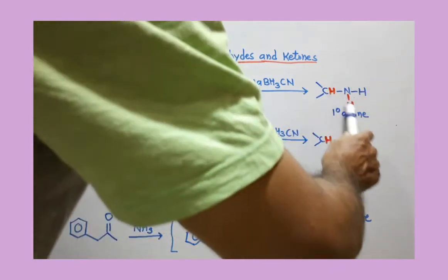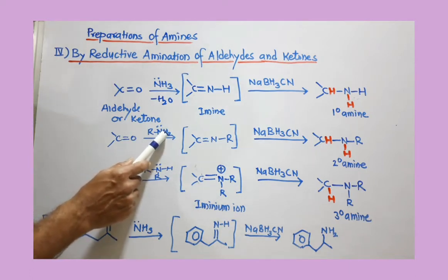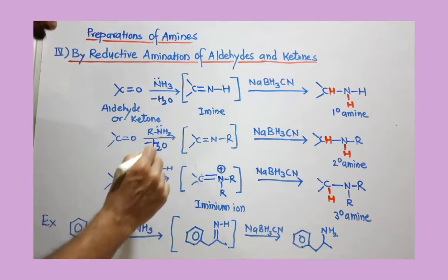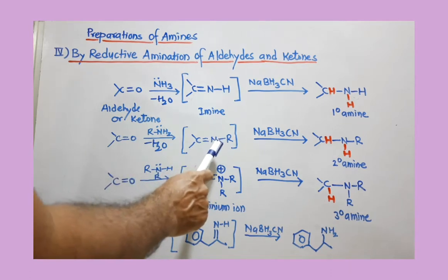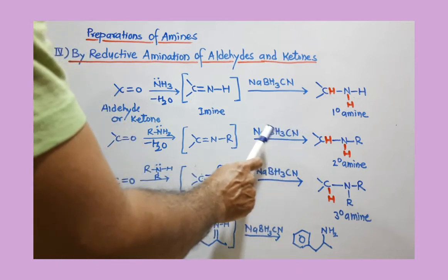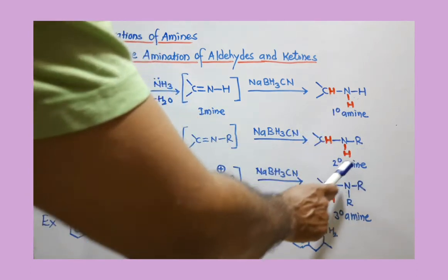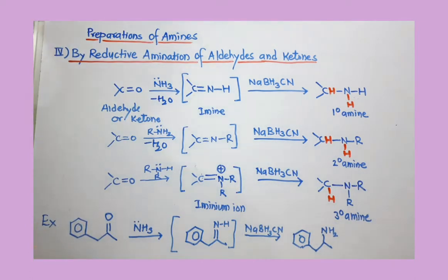If instead of ammonia you use a primary amine, two hydrogens are taken from the primary amine, water is liberated, and a new compound is produced. This compound is then treated with sodium cyanoborohydride — one hydrogen joins the carbon and another joins the nitrogen, shown in red, removing the double bond.